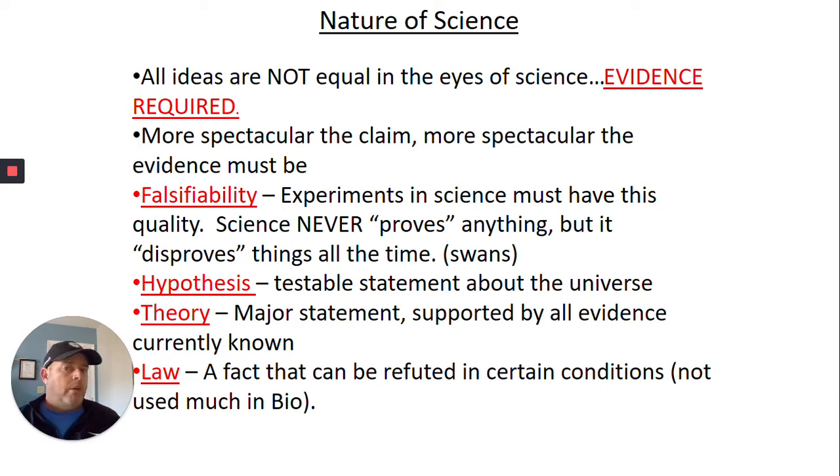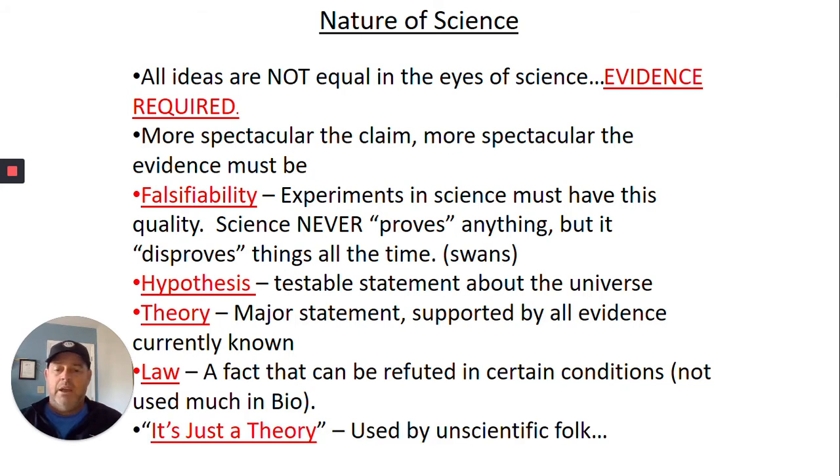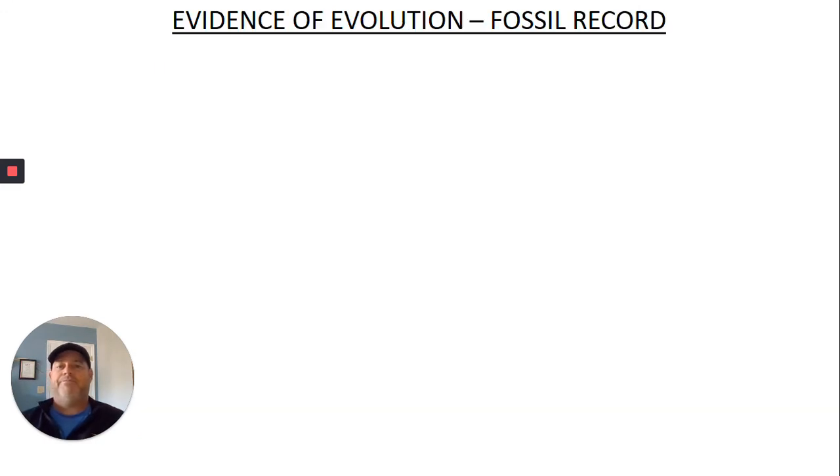The big bang theory has a ton of evidence, like hundreds or thousands of experiments and data points behind it. So a theory in science is much more robust than it is that we use in our everyday language. A law is just a fact that cannot be refuted. We don't have these in bio as much. I think I mentioned that on the last slideshow. We do have natural selection, but still not called a law. And I already kind of went through my it's just a theory speech.